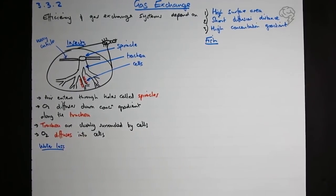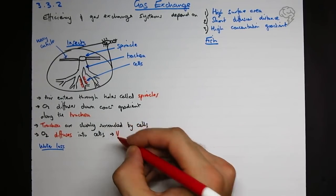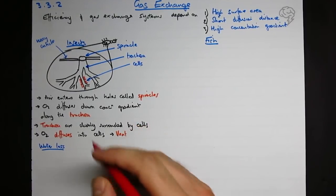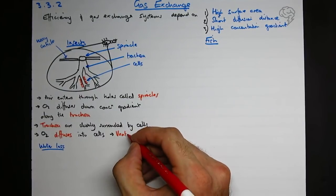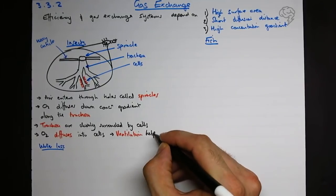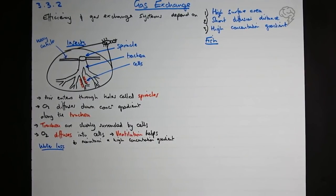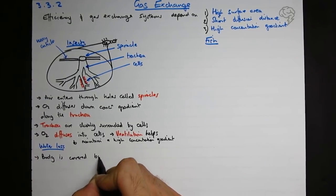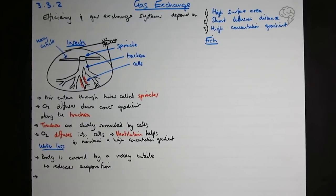I'm going to do a little bit on water loss. Something I've just missed is ventilation. They can pump their body - called abdominal pumping - which helps the flow like a lung and helps maintain a high concentration gradient. On water loss: the body is covered by a waxy cuticle which reduces evaporation. It can also close its spiracles if it's really dry, though it needs some open to respire.